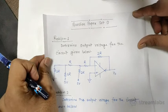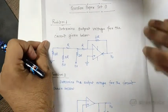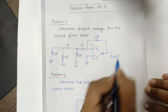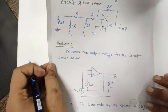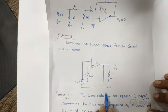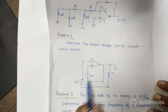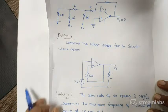The first set I am discussing is question paper set 0. In this question paper, the first question is to determine the output voltage for the circuit given. The second problem is also to determine the output voltage for a circuit where it is assumed the power supply is sufficient — with a 1 volt input and a 3 volt input voltage.